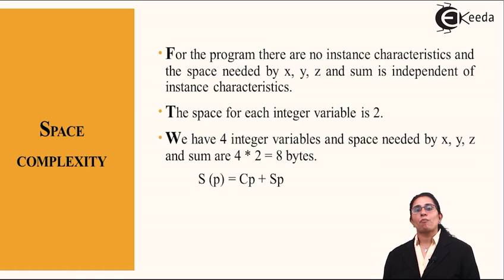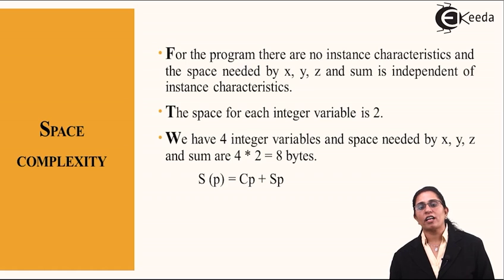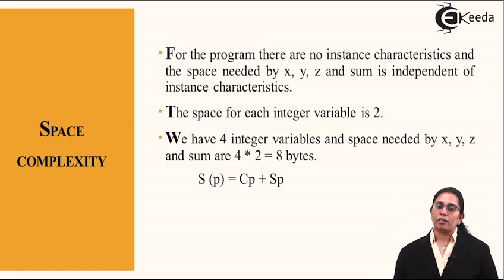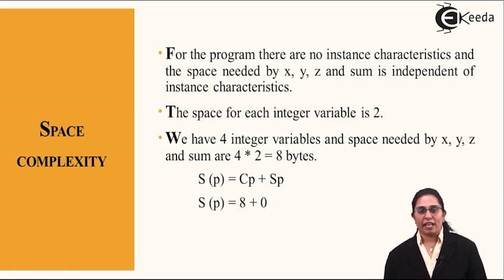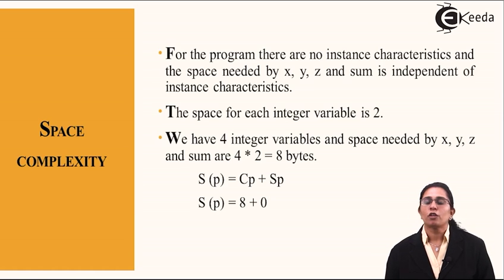So, space complexity is equal to CP plus SP, that is, the constant value and the dynamic value. So, constant value variables are 4, which means I have a constant value of 8, but there is no dynamic part in this program. So, my space complexity for this particular program is 8.